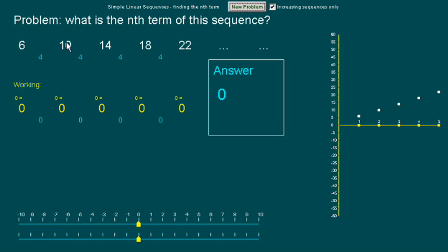The first thing to notice is that it goes up by 4 each time. Now, what's the simplest sequence that goes up by 4? Well, that would be the 4 times table. So let's draw that. There's the 4 times table in yellow.